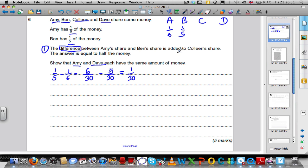Now that amount is added to Colleen's share and you get half the money. What would half of 30 be? It would be 15 out of 30. So half must equal 15 out of 30 once 1 over 30 has been added. So Colleen before must have had 14 out of 30.